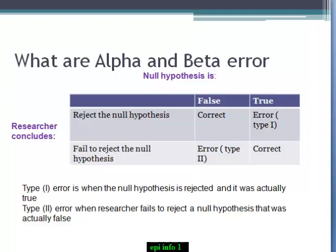But if you reject the null hypothesis and it was true, this is type 1 error. And also, if you failed to reject the null hypothesis, but it was actually false, this is type 2 error.